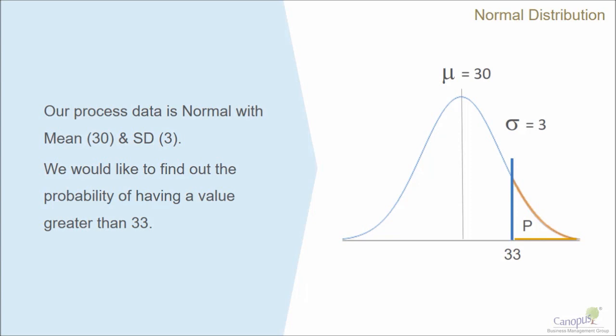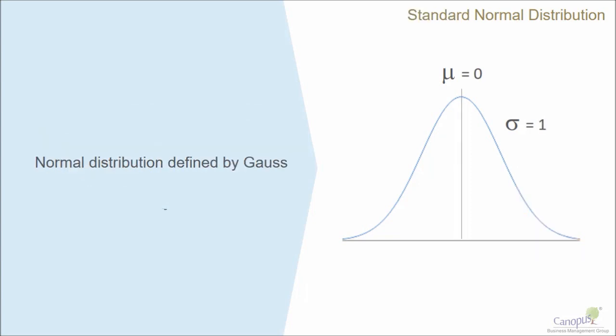Gauss created a normal curve which has a mean of 0 and a standard deviation of 1, so that is what is called the standard normal distribution.